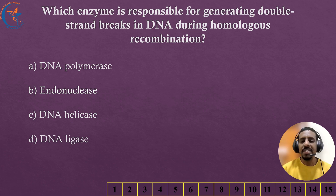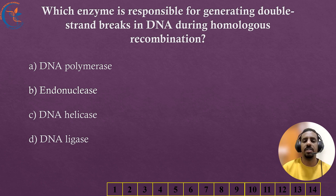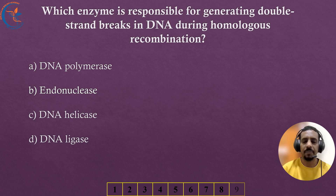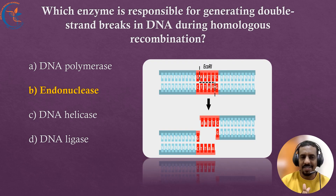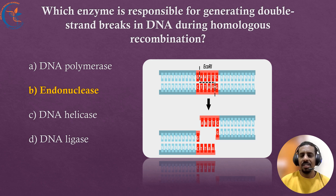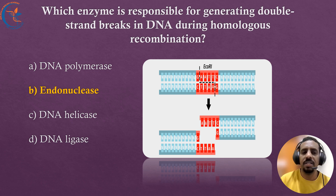Which enzyme is responsible for generating double-strand breaks in DNA during homologous recombination? The correct answer is endonucleases. Endonucleases make internal cuts in DNA, which is important for homologous recombination — a process that helps cells exchange genetic material and repair damaged DNA.